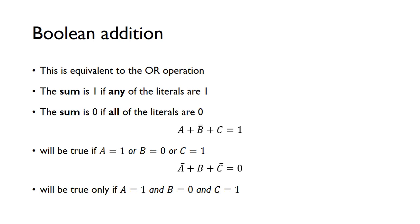It's only if all the literals are 0 that the sum is 0. Again, this comes directly from the truth table. We've got 4 possible inputs for a 2-input OR gate. So we call it A, B, and this will be the sum. We can see the sum is 1 if any of the inputs or literals are 1, and it's only a 0 if both of the inputs are 0.